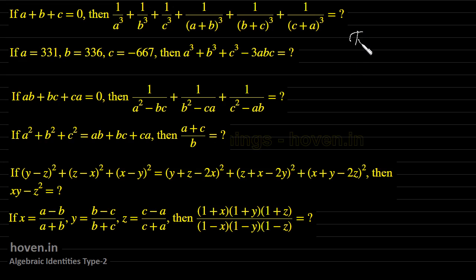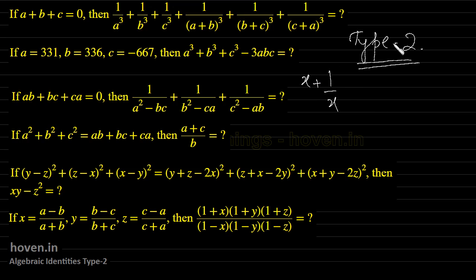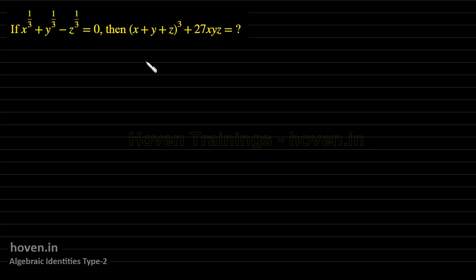Now these questions I classify as Type 2 questions. In Type 1, I took up questions of a reciprocal and a value type. Then in Type 2, we are taking up all those questions which have three different types of variables. So let us start taking up some examples. This is our first question, but before I take up this question, let me take a review of the formulas that will be of help to us.